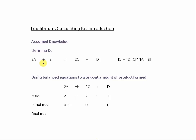So the assumed knowledge here is that you can define Kc. So for example, if we have 2A plus B going to 2C plus D, we'd define Kc as the concentration of the things on the right. So that's C squared multiplied by D, and divided by the things on the left, that's A squared divided by B.